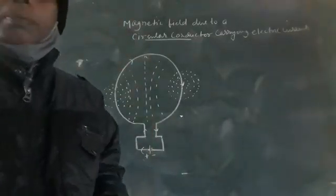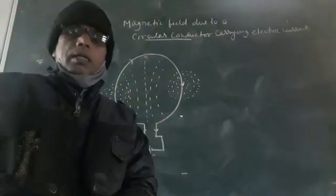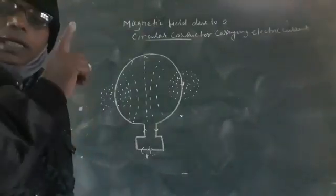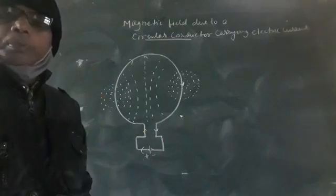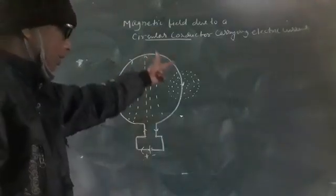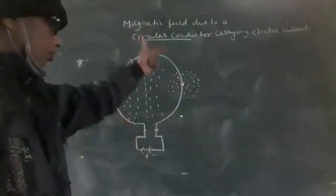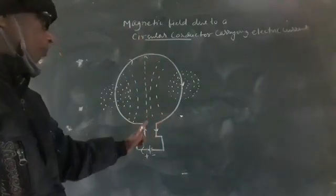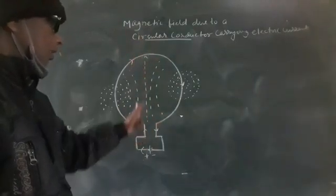So yesterday we have seen, if the current carrying conductor is straight, the nature of magnetic field is circular. But if the current carrying conductor is circular, the nature of magnetic field is straight in the middle.